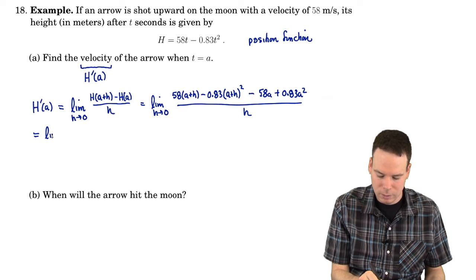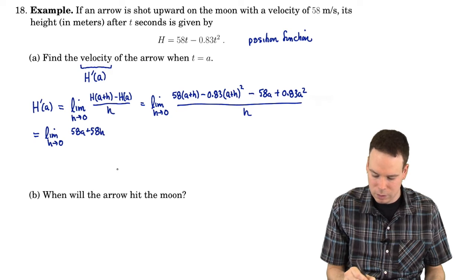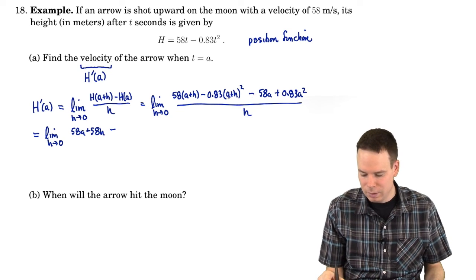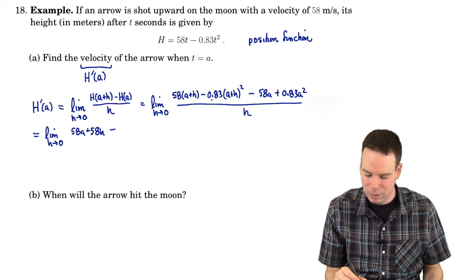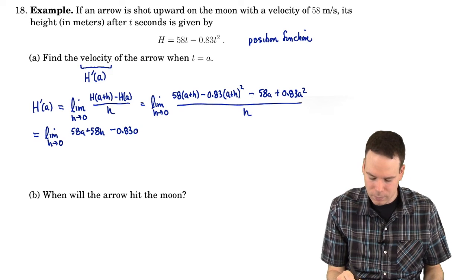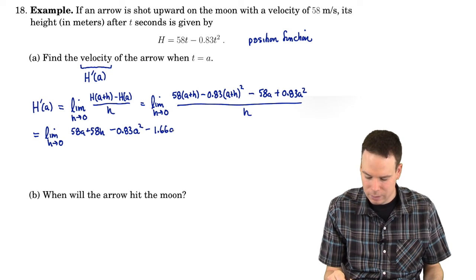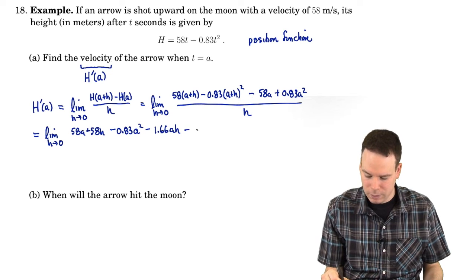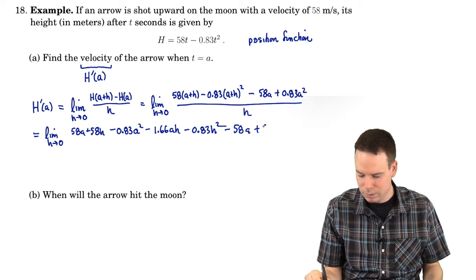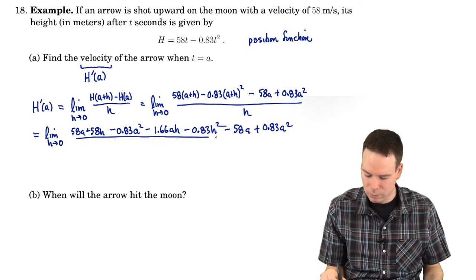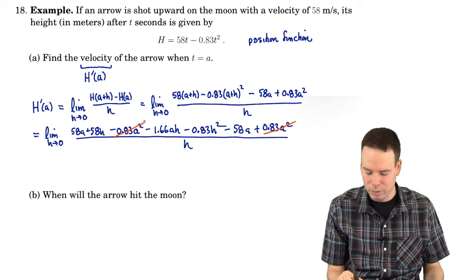So I'm going to use a little bit of algebra to try to get that h to show itself. So this becomes 58a plus 58h minus, so now I can expand this out. a plus h all squared is a squared plus 2ah plus h squared. Then I also have to multiply each of those three terms by the negative 0.83a squared minus. So 2 times 0.83 is the 1.66 and that's multiplied by the ah cross term minus 0.83h squared.